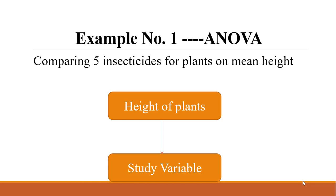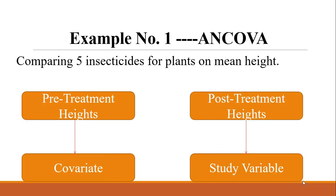The heights of plants after applying the five insecticides are the post-treatment heights, and these may have a relationship with the pre-treatment heights. If these two variables have a relationship, then the results of ANOVA will no longer be meaningful or valid. This pre-treatment height variable is called the covariate, and the post-treatment height is our study variable. Therefore, before proceeding with the analysis, we must incorporate the effect of the covariate.